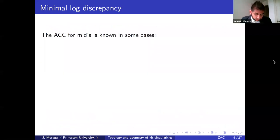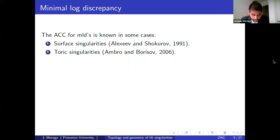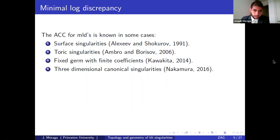Let me mention some cases in which ACC for minimal log discrepancies is known. For surface singularities, this is due to Alexeev and Shokurov, using the classification of KLT surface singularities. For toric singularities, this is due to Ambro and Borisov. For fixed germs with finite coefficients, these are results of Kawakita. For three-dimensional canonical singularities, this is the result of Nakamura in 2016.